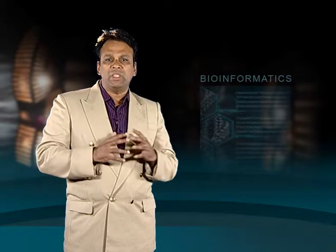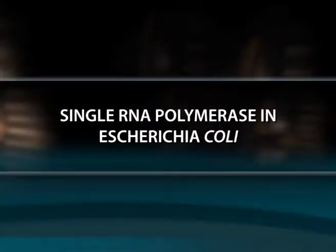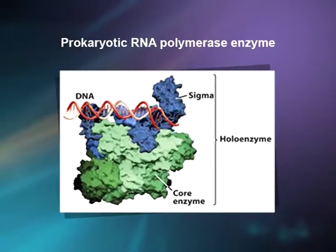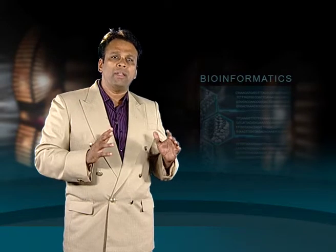We begin our consideration of transcription machinery in prokaryotes by examining RNA polymerase in E. coli. In bacterial systems like E. coli, a single RNA polymerase species is responsible for synthesis of all kinds of RNAs: mRNA, tRNAs and rRNA. This RNA polymerase has been purified and its structure and function is now known in some detail.